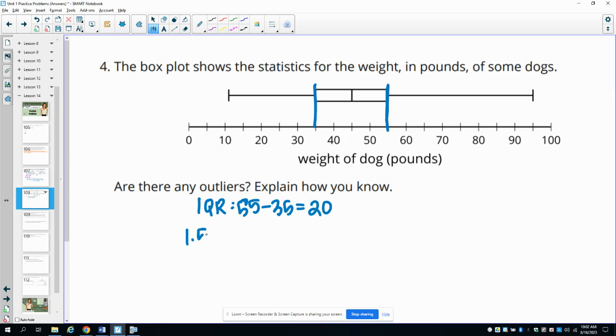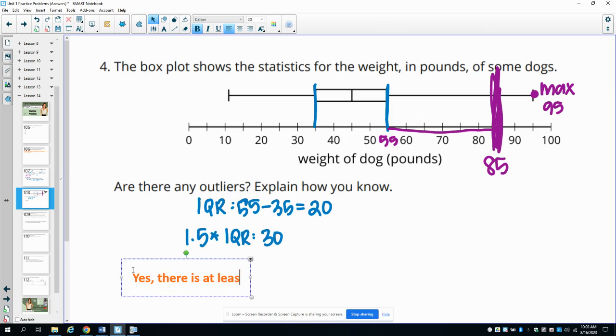Then you want to look at 1.5 times the IQR, so 1.5 times 20 gives us 30. Any numbers that are further than 30 from either IQR are considered outliers. This is at 55, so if we go up 30 from that, anything outside of 85 is an outlier. We know that this is the maximum number in the data set, so we know that 95 was a data point. Absolutely, we know there's at least one outlier. Yes, there is at least one outlier, 95, because it is more than 1.5 times the IQR above Q3.